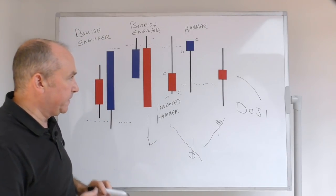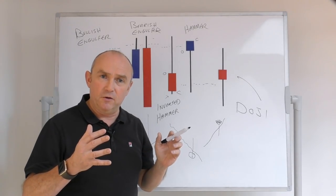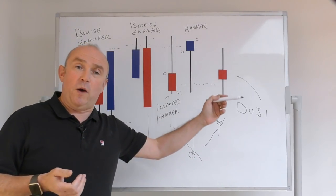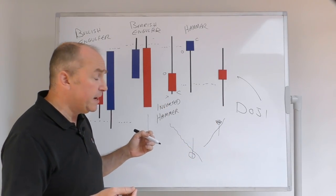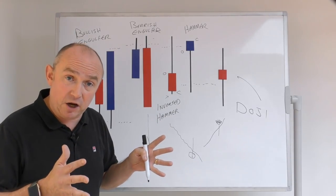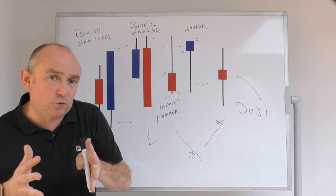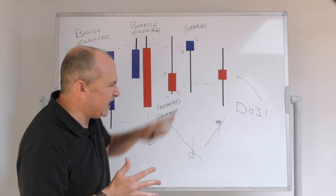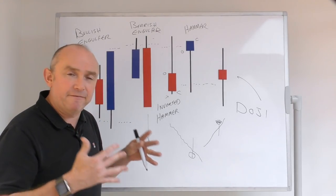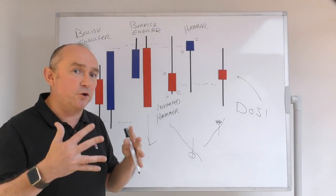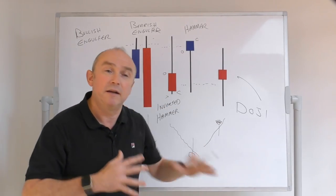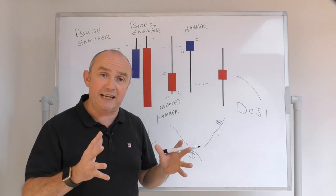Then you've got the famous doji, which represents an area of indecision — neither the bulls nor the sellers won control of that particular time period. Looking at a doji on its own isn't the best way to play it. The best way is looking at the next couple of candles afterwards to see what price is actually doing. If you see a number of dojis and then a break higher, that indicates the market wants to push higher; if a break lower, a potential rollback.